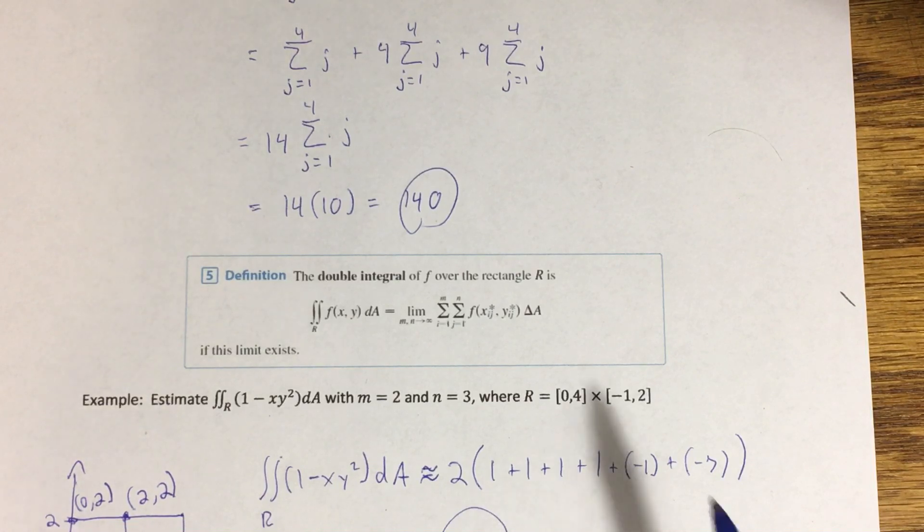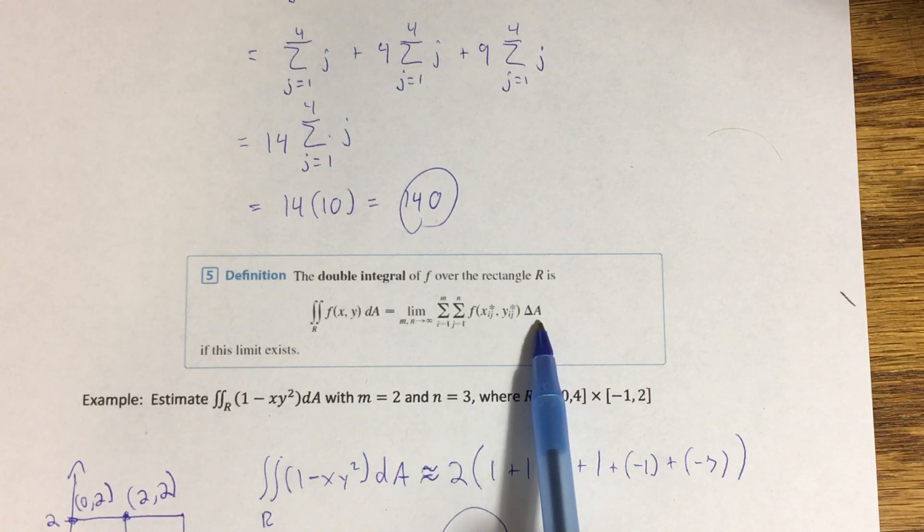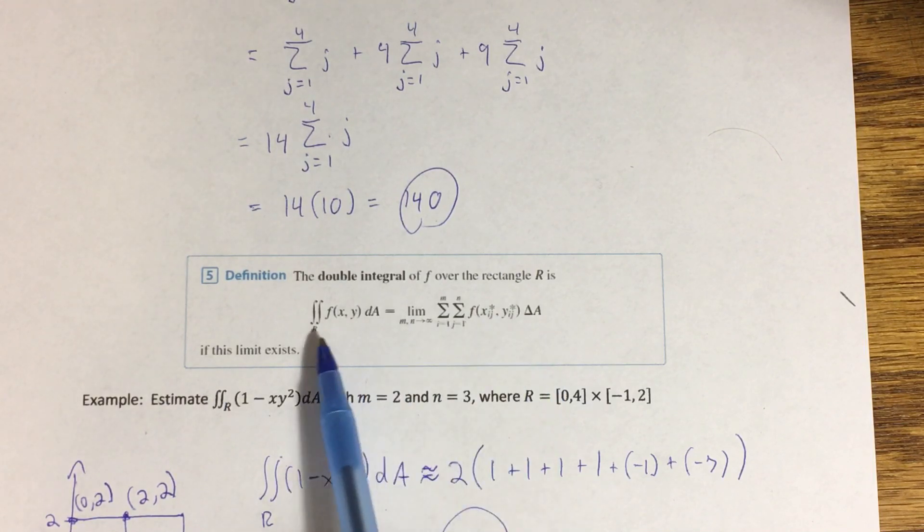In the previous video, we saw that the double sum here approximates the volume under a surface given by f(x,y) over some rectangle R.